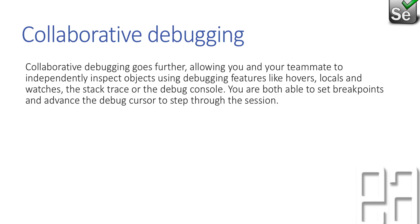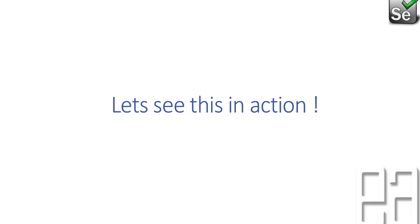Collaborative debugging goes further, allowing you and your team to independently inspect objects using debugging features like hovering, locals, watch, stack trace, debug consoles, and more. You are both able to set breakpoints and advance the debug cursor to step through sessions. That's really cool, and I won't be showing collaborative debugging in this video, but yes, you can do that as well. Let's quickly see everything in action.